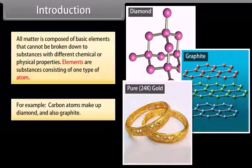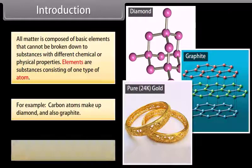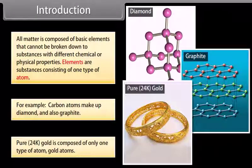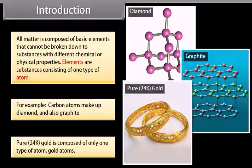For example, carbon atoms make up diamond and also graphite. Pure 24-karat gold is composed of only one type of atom, gold atoms.